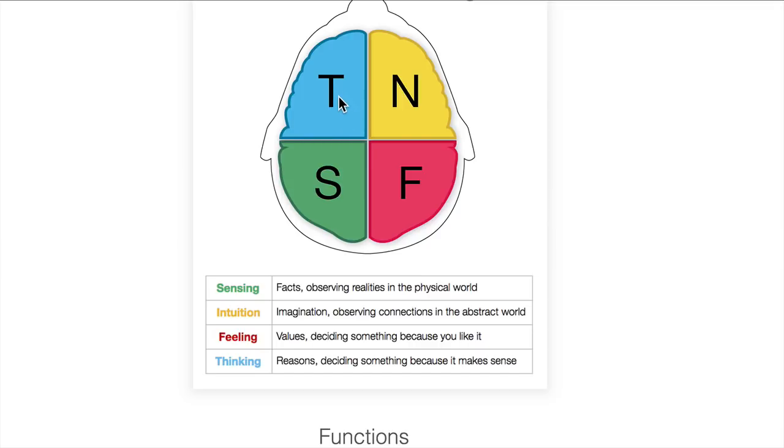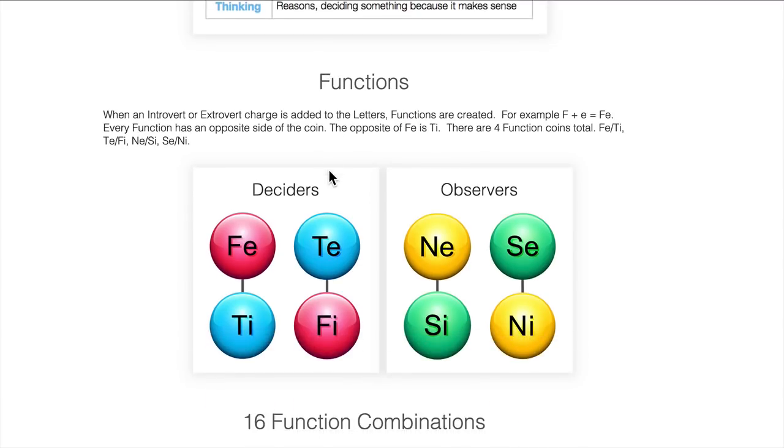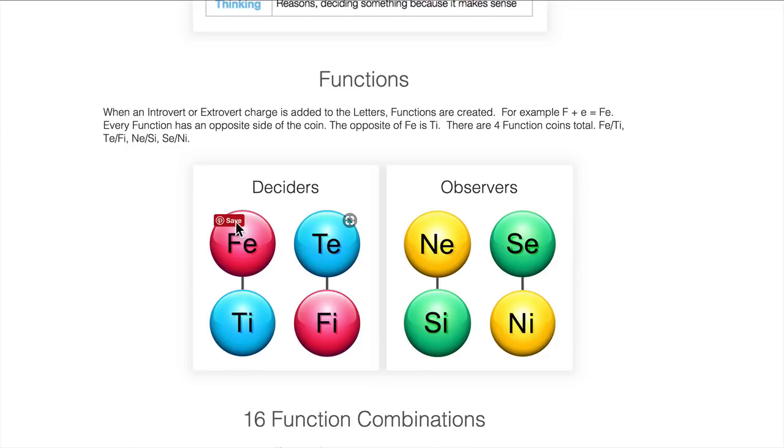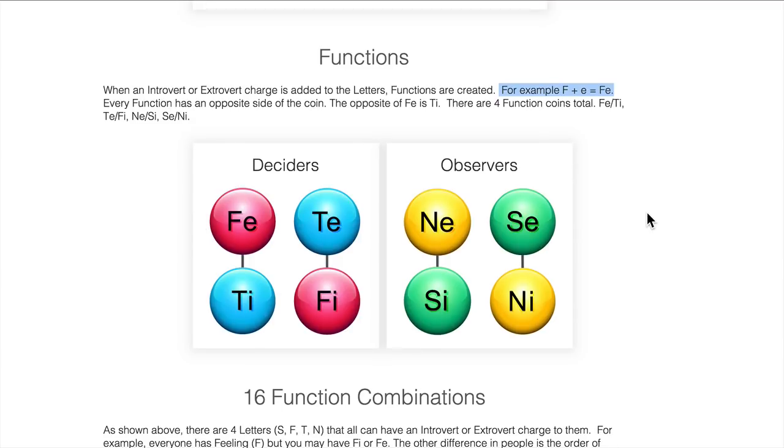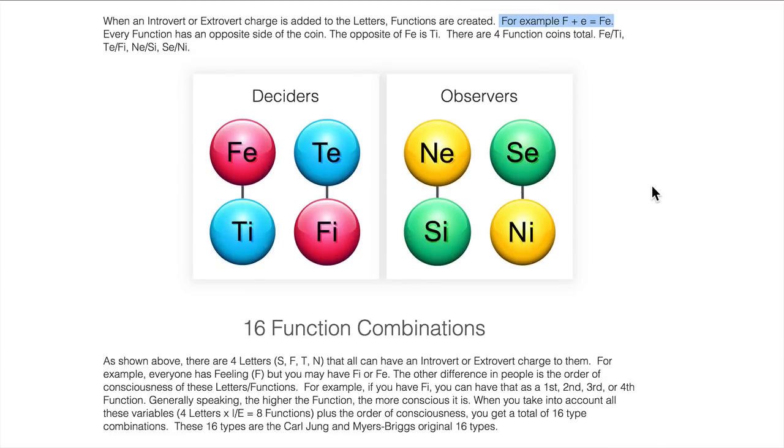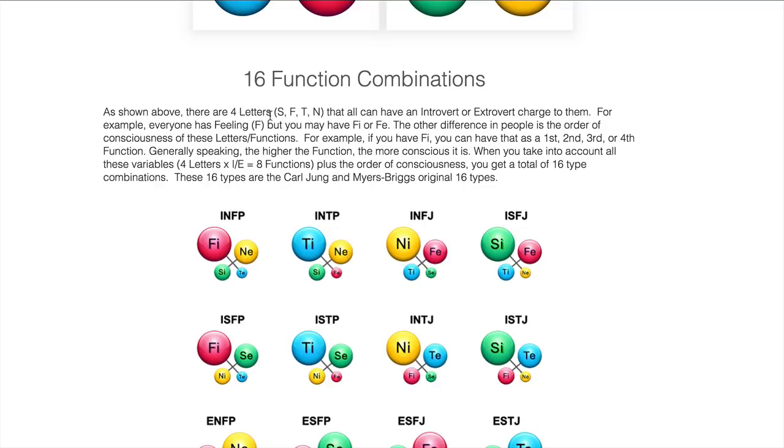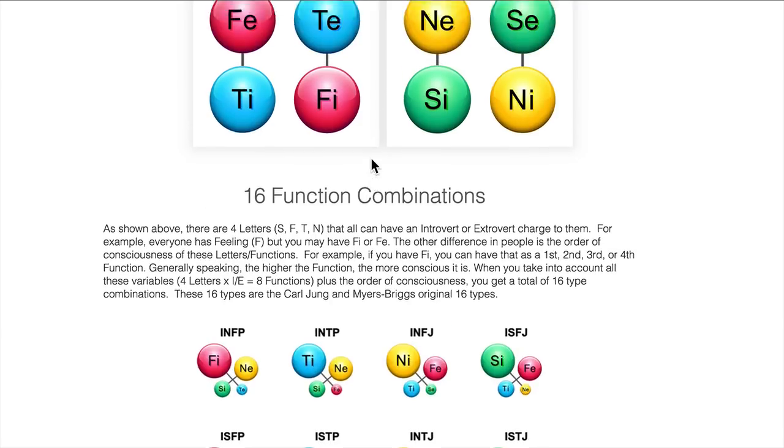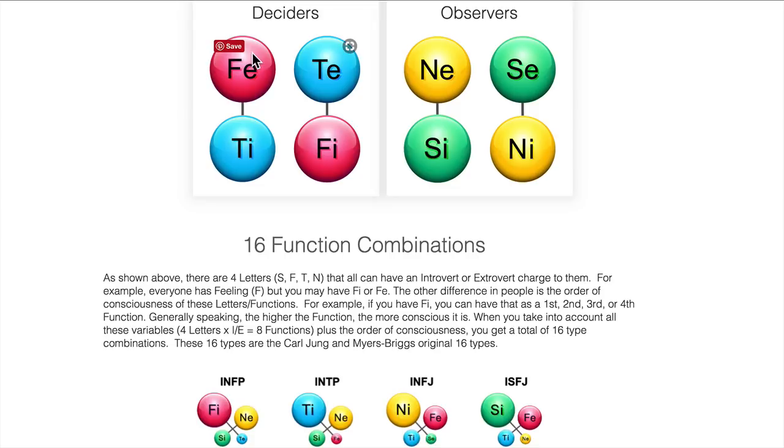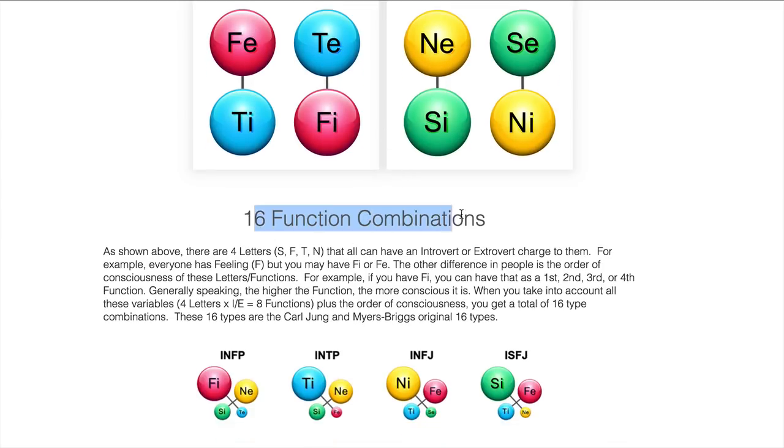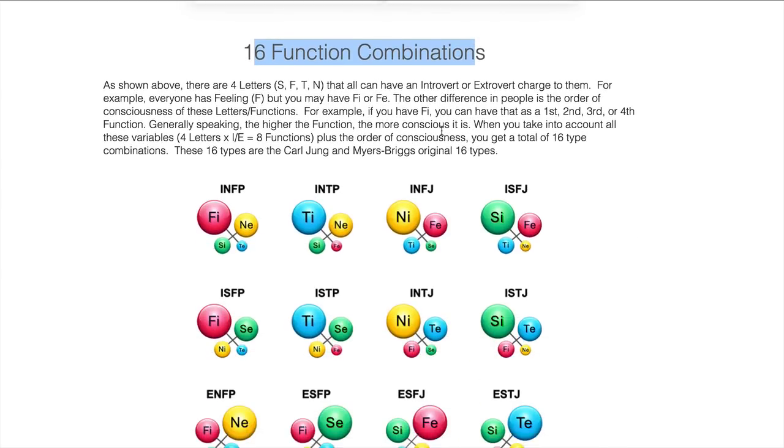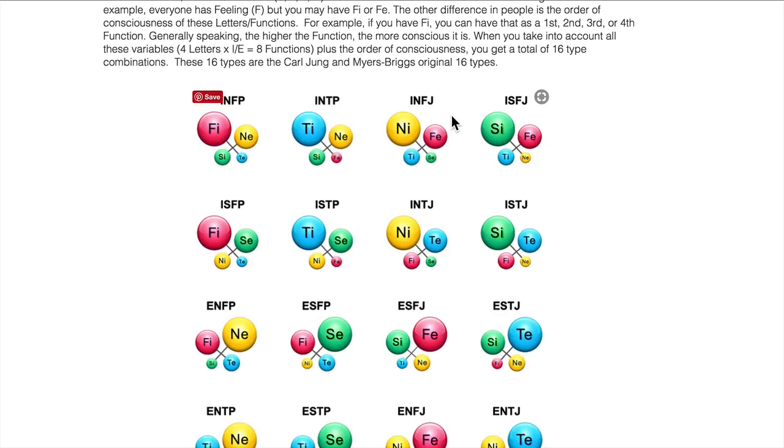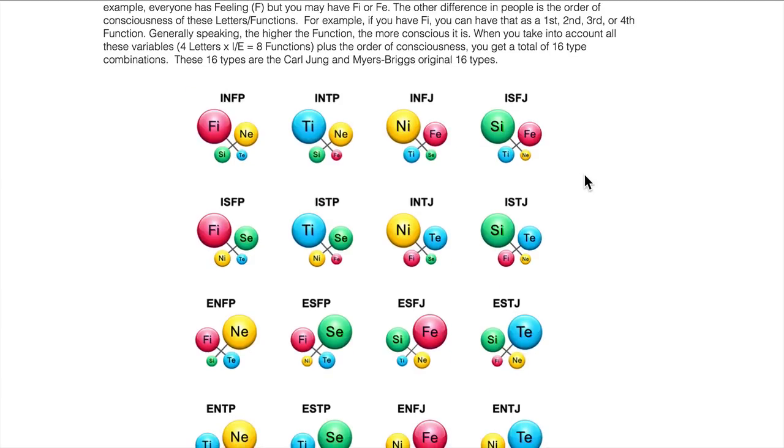The functions are just when you're adding an introvert or extrovert charge. You add that introvert-extrovert charge and create the eight functions. So it's pretty simple math. F plus extrovert equals Fe. Now you know where the eight functions come from, and it really just unfolds from there. Now you got these four letters, these eight functions, and they're coins. Fe and Ti are opposites, Te and Fi are opposites. There's only 16 combinations you can align these coins, which is your Myers-Briggs 16 types.